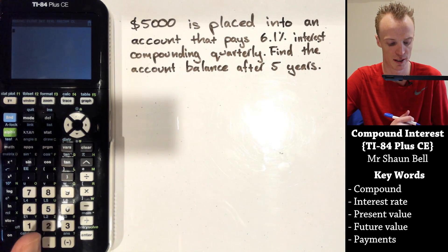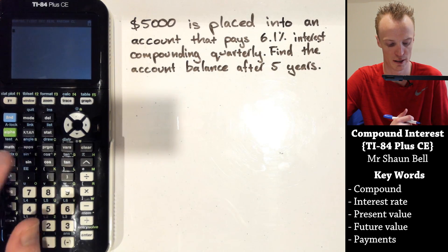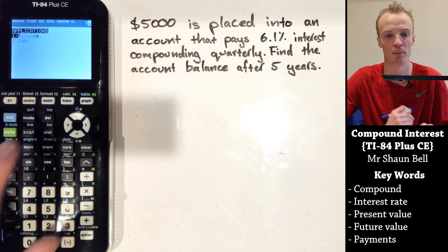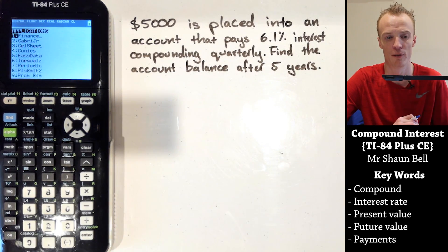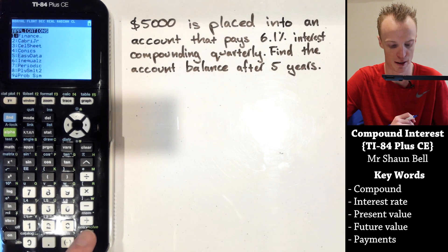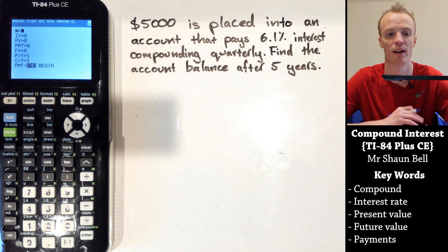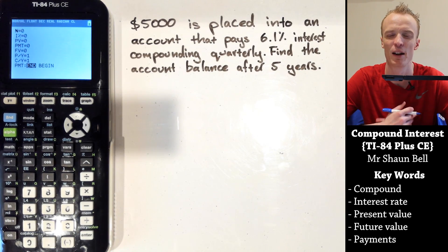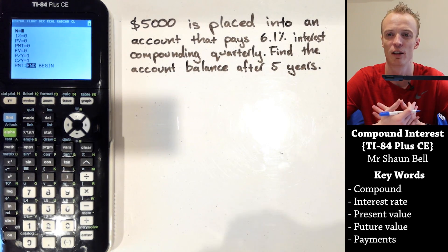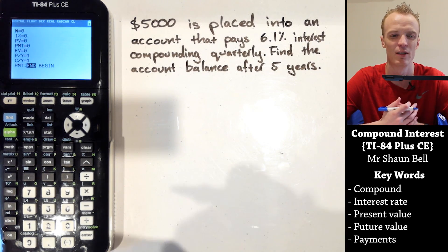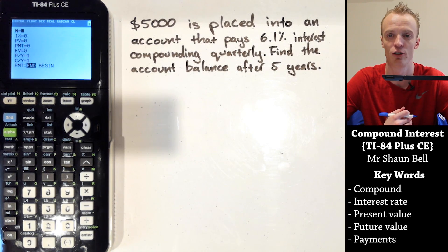First, to get into the right application, select the Apps button and go to the first app, which is the Finance app. From there, go into the TVM Solver — option one — and you'll have a list of different information that you can input and also calculate using this application.